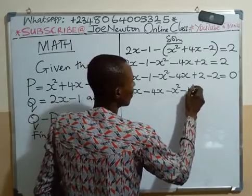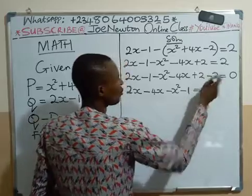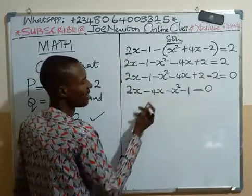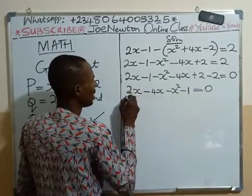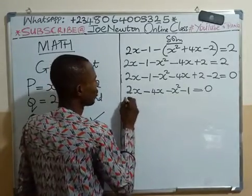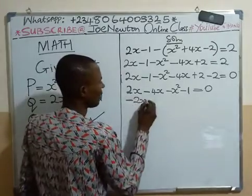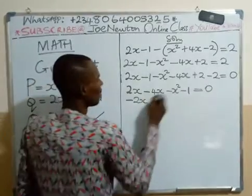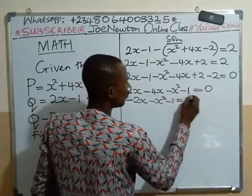Then this 2 minus 2 is of course zero, leaving us with all this is equal to zero. So at this point, 2x minus 4x is minus 2x. So what we are left with here, we have minus 2x minus x squared minus 1 is equal to zero.